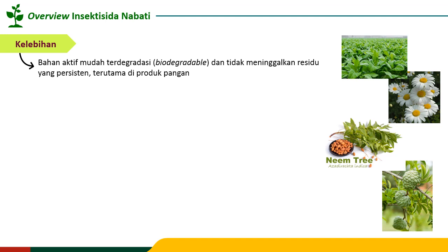Selain itu, sejumlah senyawa dari tumbuhan yang digunakan sebagai bahan aktif insektisida nabati memiliki karakteristik mudah menguap. Karena karakteristik tersebut, penggunaan insektisida nabati relatif tidak meninggalkan residu yang bertahan lama di permukaan bagian tanaman. Seandainya kita mengaplikasikan insektisida nabati pada buah yang akan dipanen, senyawa tersebut tidak akan menempel terlalu lama di permukaan kulit buah sehingga lebih aman jika dikonsumsi.